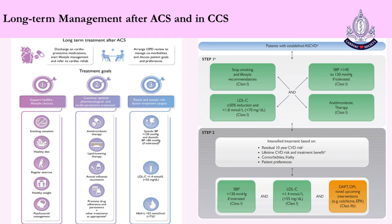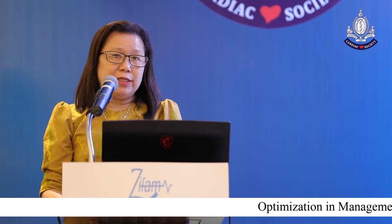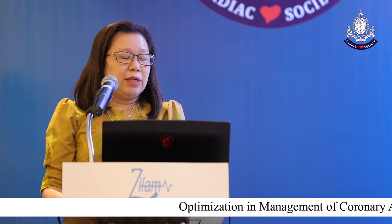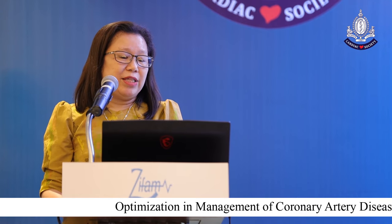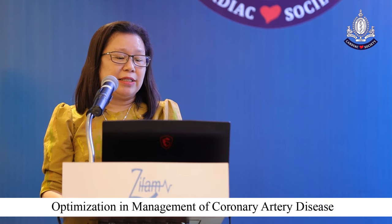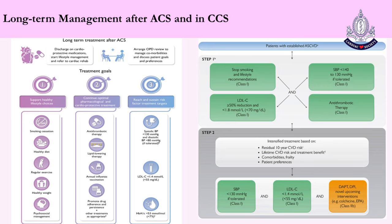This is the long-term management after ACS and CCS. When the patient is discharged after acute coronary syndrome, we prescribe cardioprotective medications, start lifestyle management, refer to cardiac rehabilitation, arrange OPD appointments for comorbidities, and arrange follow-up visits. Healthy lifestyle modifications include smoking cessation, healthy diet, regular exercise, healthy weight, and psychosocial management. Optimal pharmacological treatment includes antithrombotic therapy, lipid-lowering therapy with LDL target less than 1.4 mmol/L, hypertension control with BP target less than 130/80, and diabetic control with HbA1c less than 7%. These targets are similarly applied in chronic coronary syndrome patients.